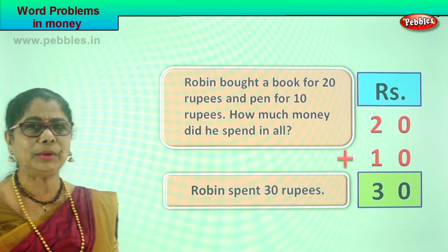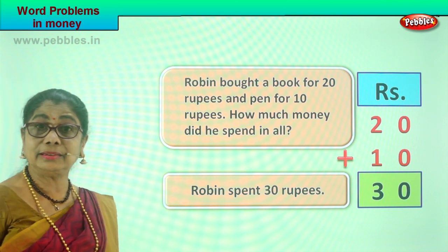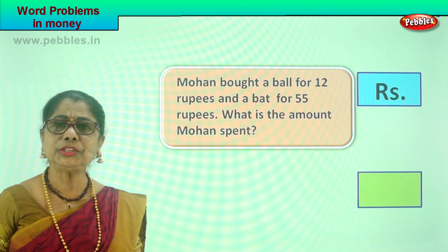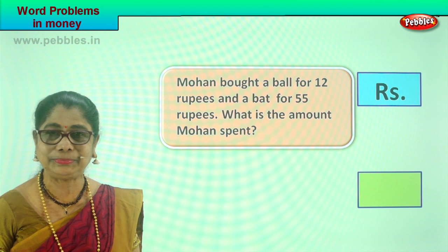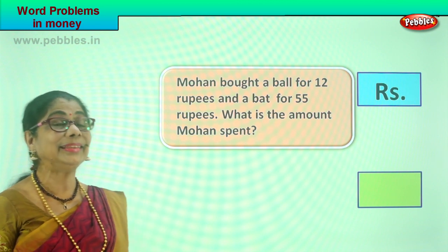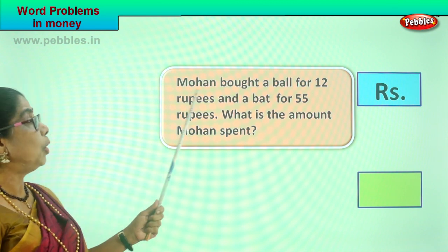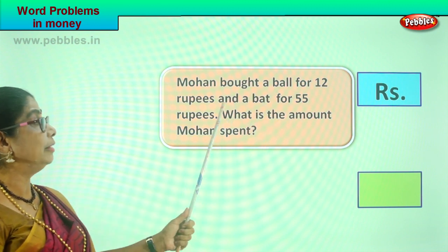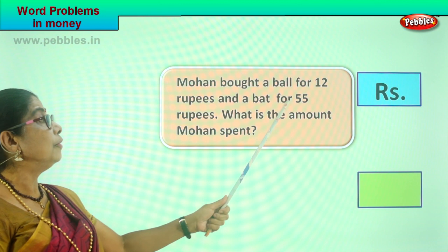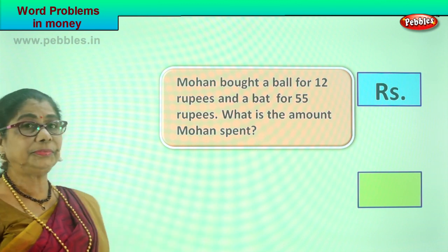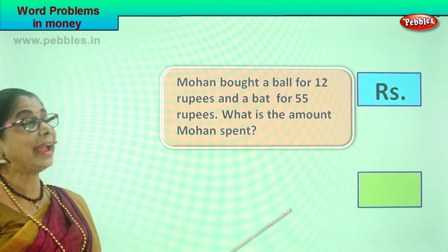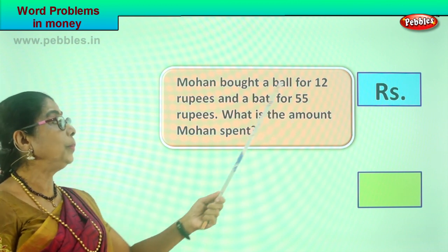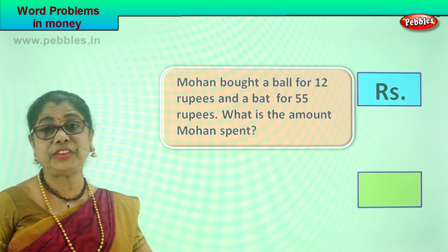Shall we take another word problem? Read together — shall we? Come, read along with me. Mohan is going shopping with his dad. What does Mohan want to buy? Mohan bought a ball for rupees 12 and a bat for rupees 55. So Mohan is telling daddy: I like to buy a ball which is 12 rupees and a bat which is 55 rupees.